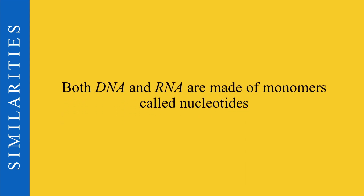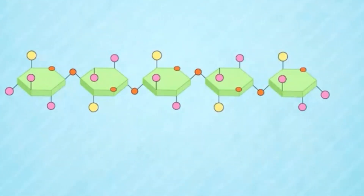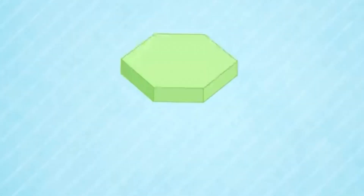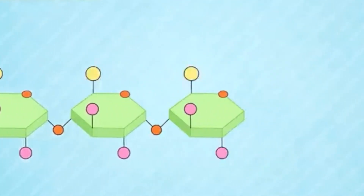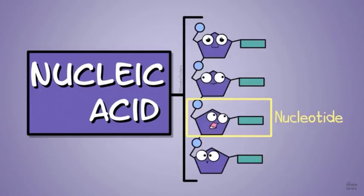This leads to our fifth similarity between these two molecules. Both DNA and RNA are made of monomers called nucleotides. A monomer is a molecule that can be linked through bonds to other identical molecules, resulting in the formation of a polymer — a long chain made with the same molecule. In DNA, the monomer is a deoxyribonucleotide and the polymer is a deoxyribonucleic acid. The same applies to RNA, where the monomer is a ribonucleotide and the polymer is a ribonucleic acid.